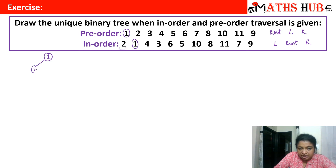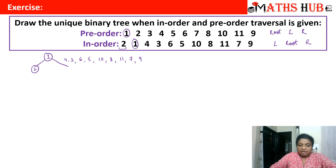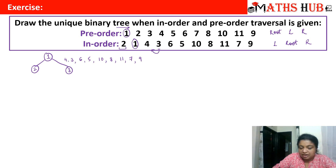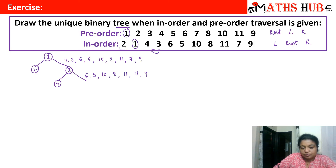There is only vertex 2 on the left of 1, and on the right we have 4, 3, 6, 5, 10, 8, 11, 7, and 9. Our next job is to find the next root: we go to pre-order and check which of all these elements appears first. 1 and 2 are already done, so 3 is coming next in the list. Vertex 3 is the next root. Coming back to in-order, towards the left of 3 we have number 4 — so 4 is in the left subtree — and on the right we have 6, 5, 10, 8, 11, 7, and 9.